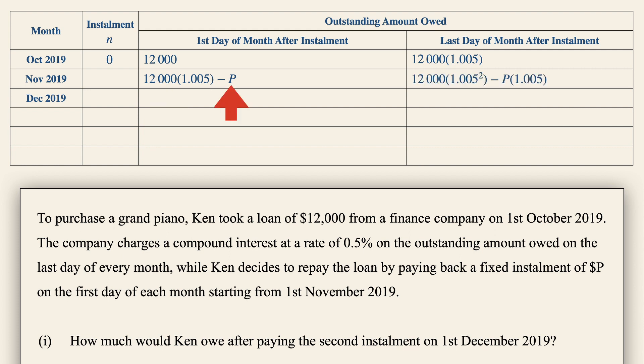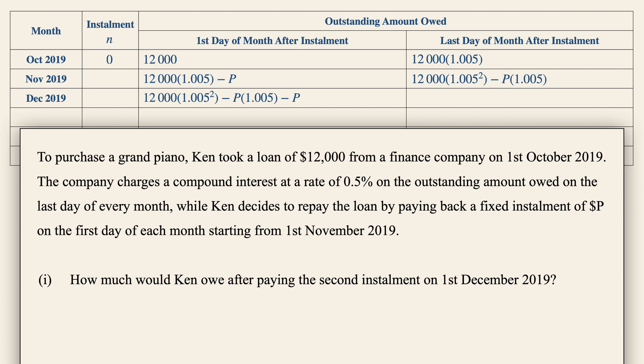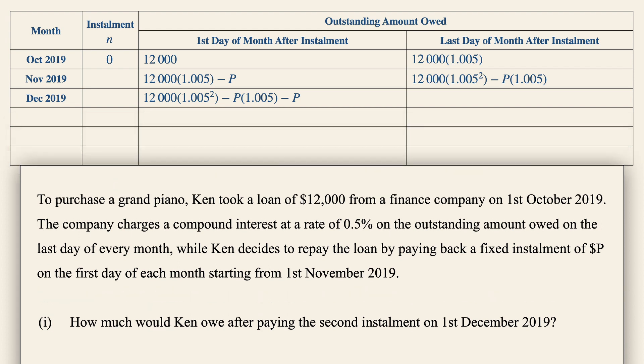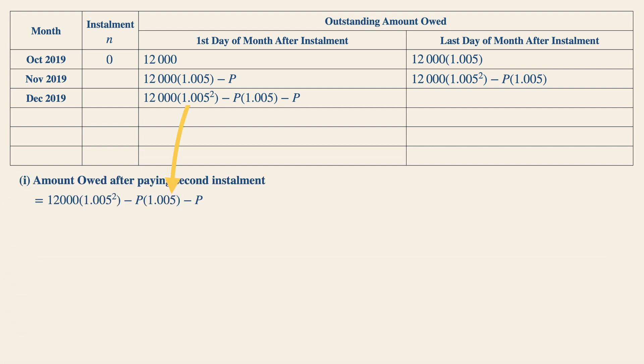Hopefully we can try to see if we can establish a pattern. In December, we subtract P dollars from the expression again. As we move along, remember to check the requirements of the question, which is to find the amount owed after paying the second installment — which is simply this expression here.